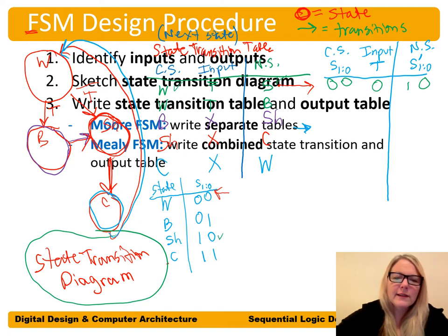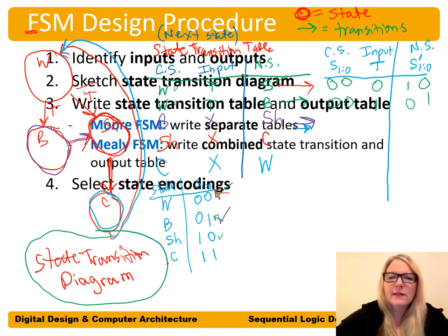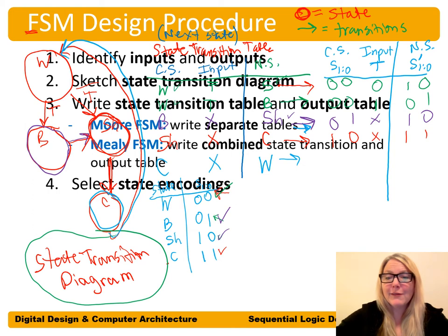Row by row: if W (00) and T is 1, next state is B (01). For state B (01), T is a don't-care, next state is shower (10). For SH (10), T is a don't-care, next state is C (11). For C (11), T is a don't-care, next state is W (00). This looks a lot like a truth table with values determining other values.